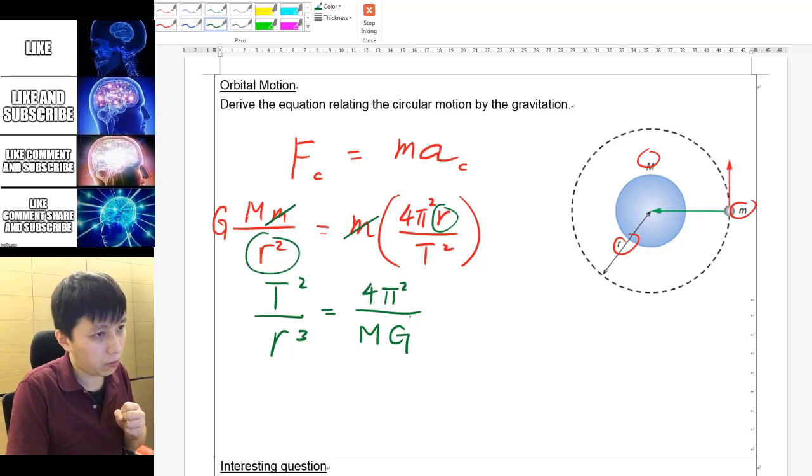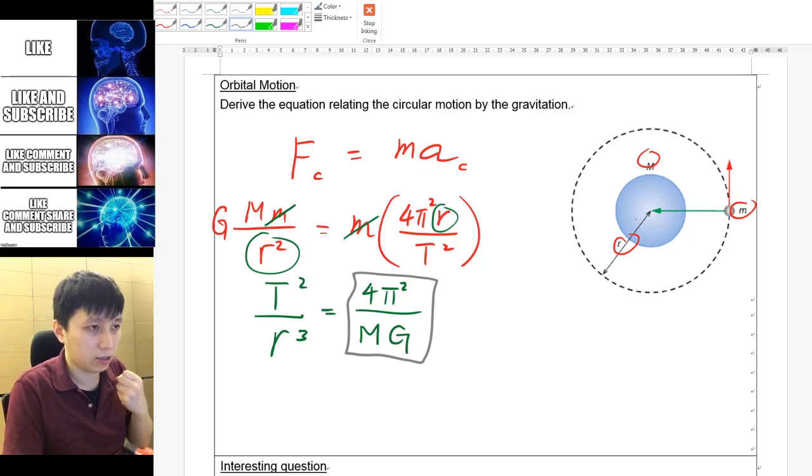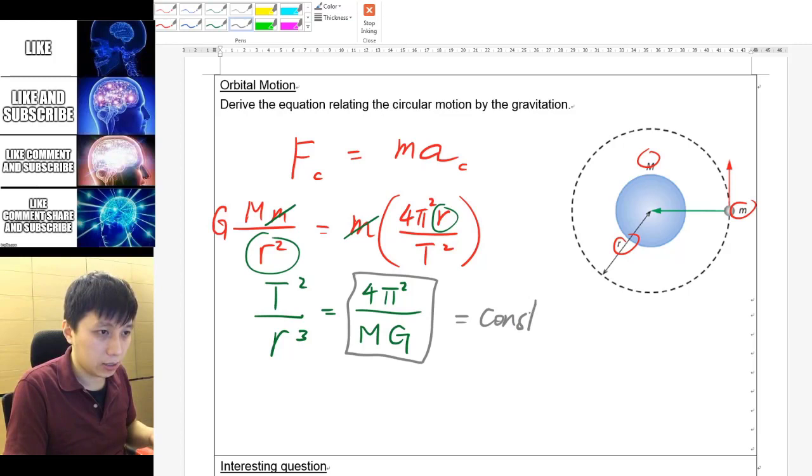And if you try to look at these things, pi is going to be constant, big G is a universal constant as well. M is referring to the center, like the mass at the center that is giving the attraction, so obviously this is going to be constant as well. So that's why this is going to be a constant.